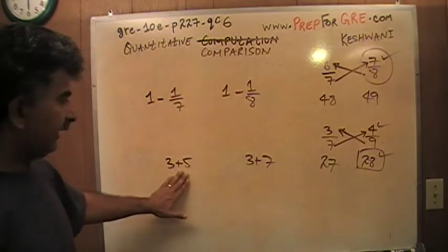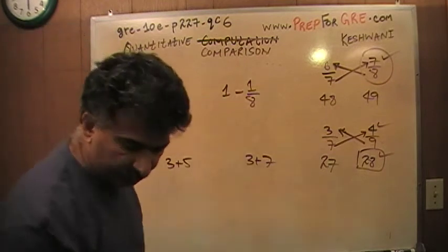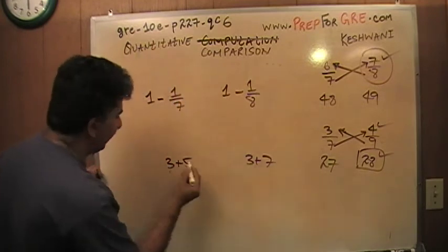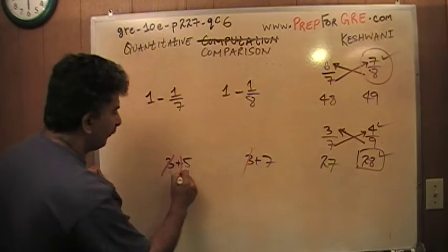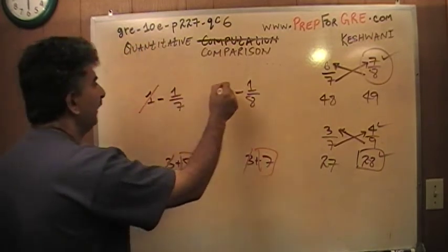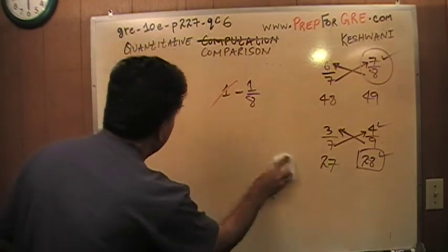So if you sat there and said 8 is more than 10, you missed the point. The point here was this, the point is, since 3 appears in both columns, since 3 appears here and here, it plays no role. We are supposed to compare the 5 and the 7. The same thing here. This 1 plays no role. So basically what we are asked to compare is negative 1/7 versus negative 1/8. Negative 1/7 versus negative 1/8.